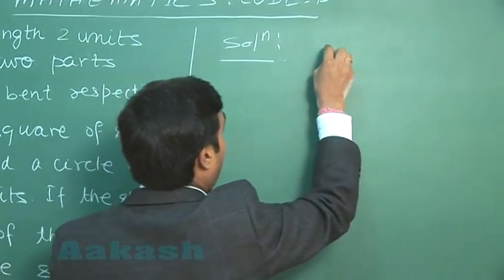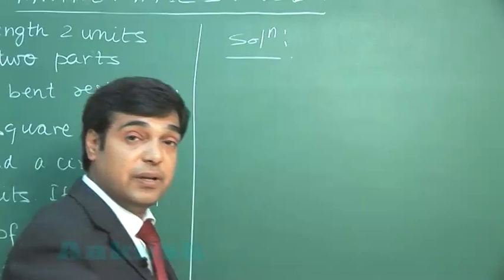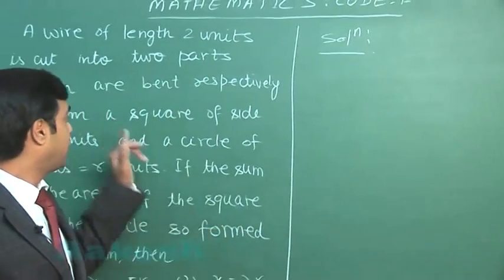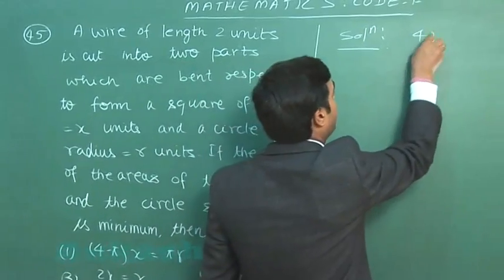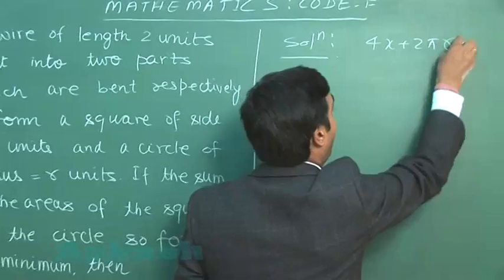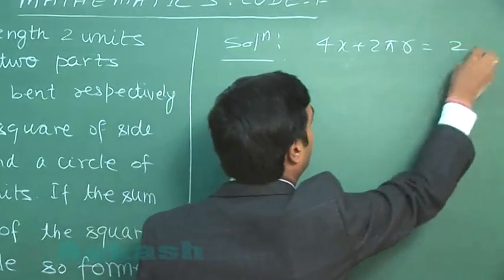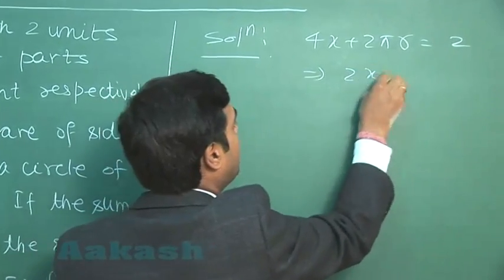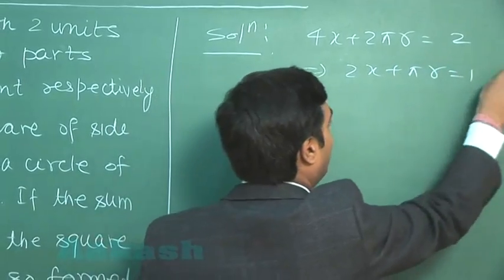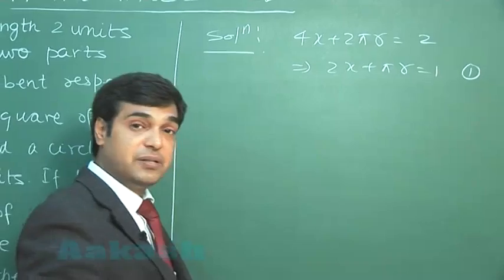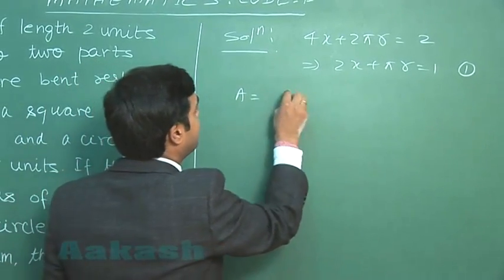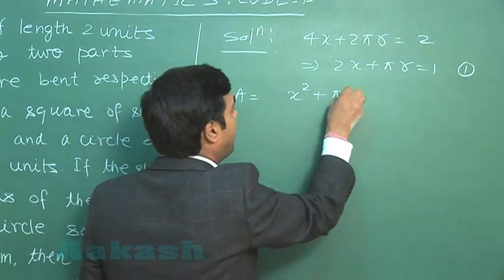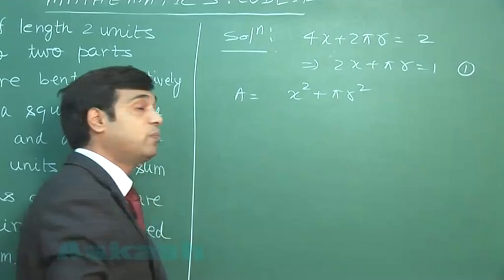It is given that the sum of the two perimeters for the square and the circle, so this is 4x plus 2πr equals 2, or simply 2x plus πr equals 1. Next, we have to find the area, that is x² plus πr² and to be minimized.